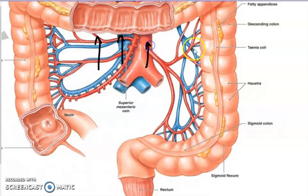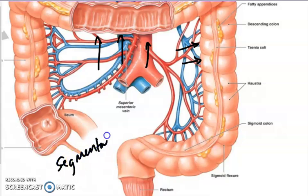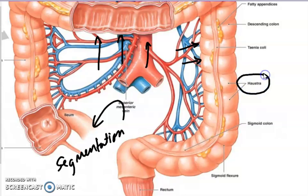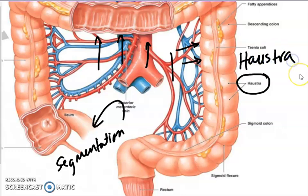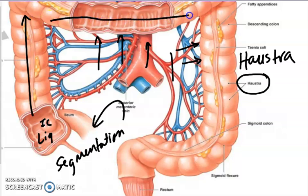You see all these cool ridges that increase surface area? That's not called segmentation — segmentation is specific to the small intestine. In the large intestine, these folds we call haustra. The haustra give it more surface area for more absorption. It is a liquid at the cecum, and then it goes ascending, transverse, descending.